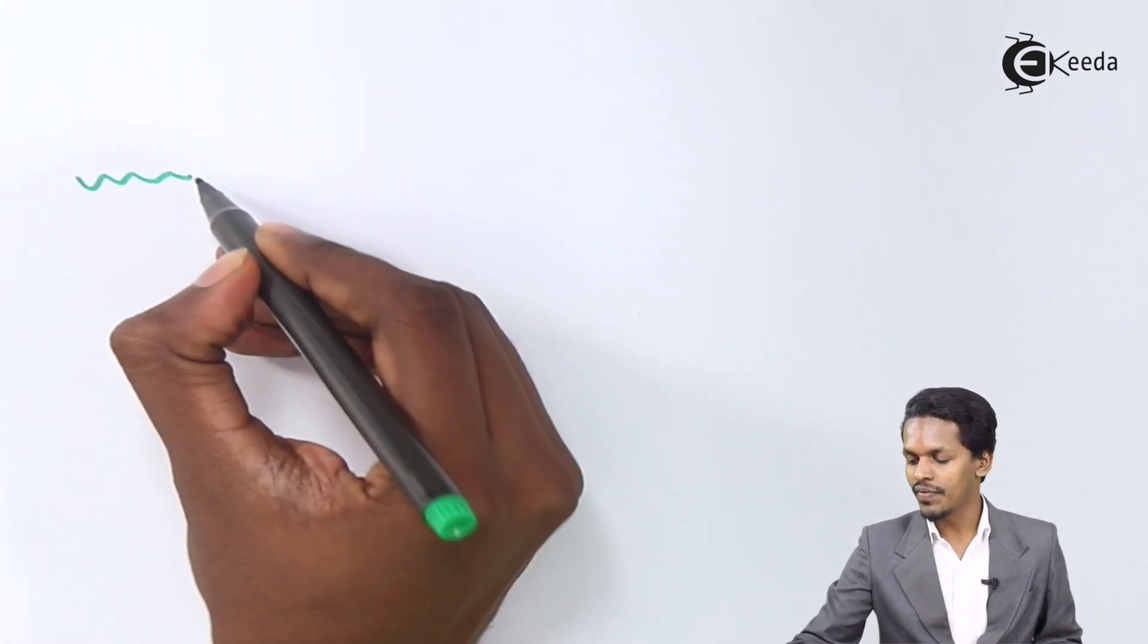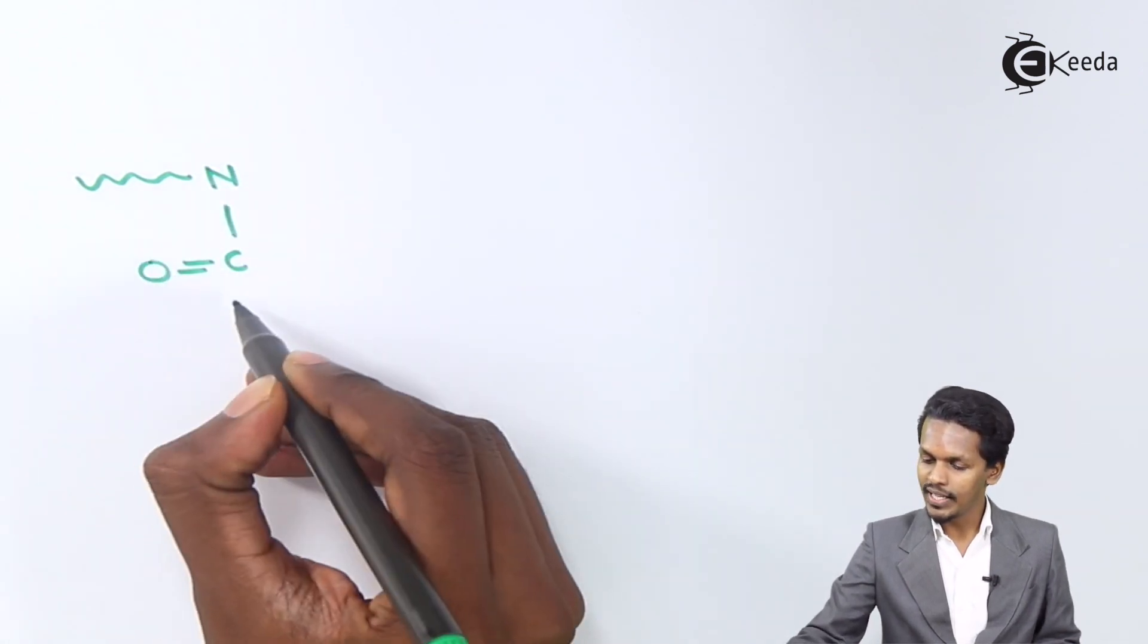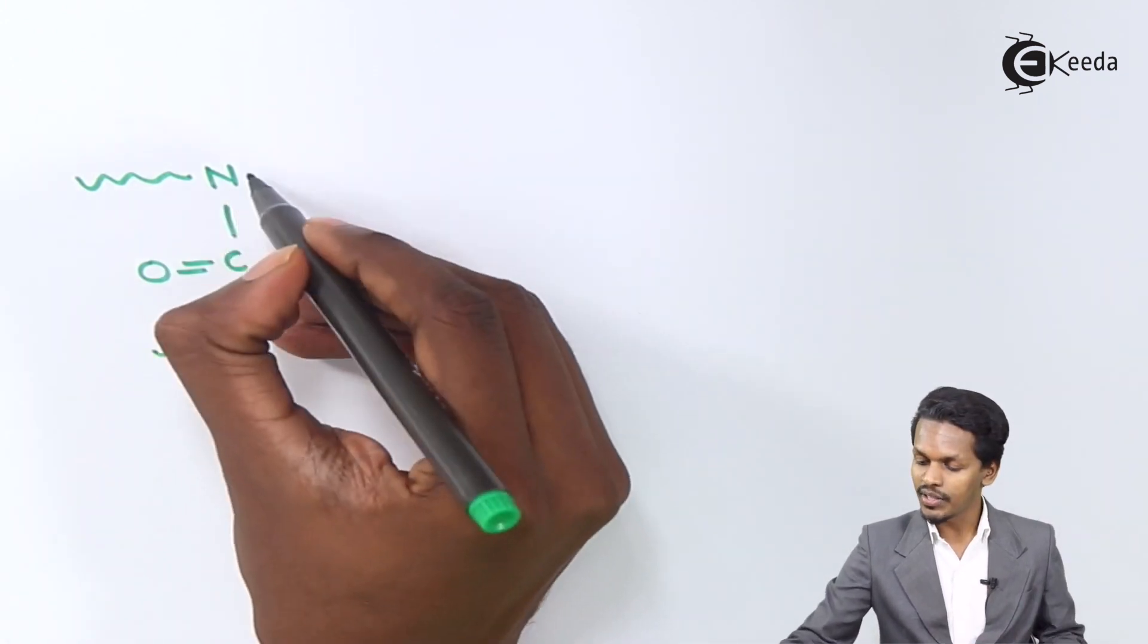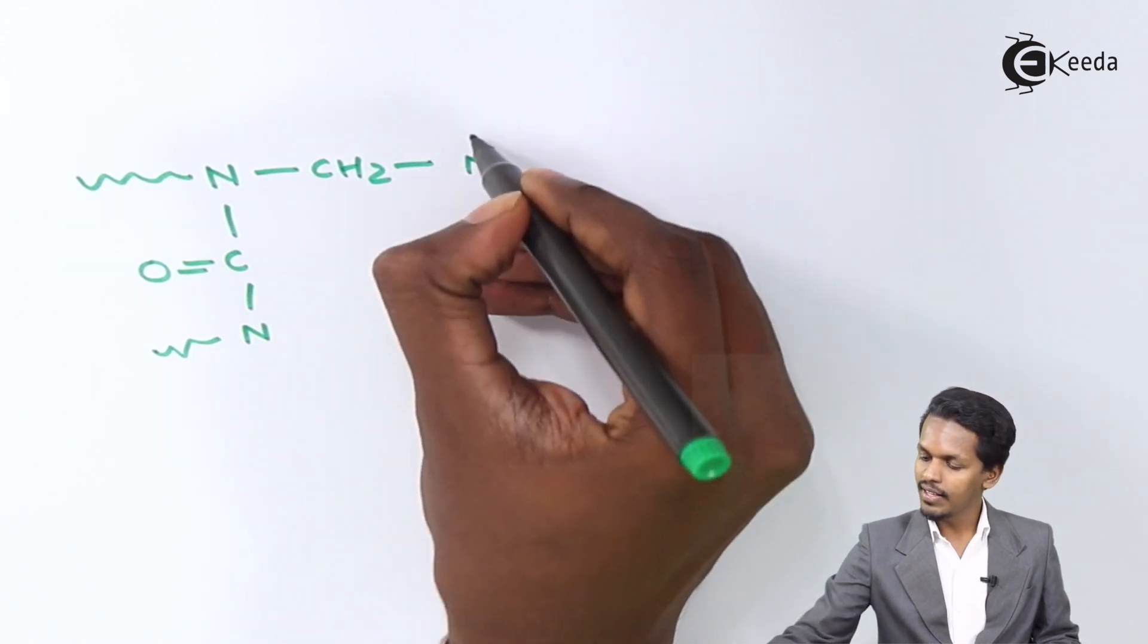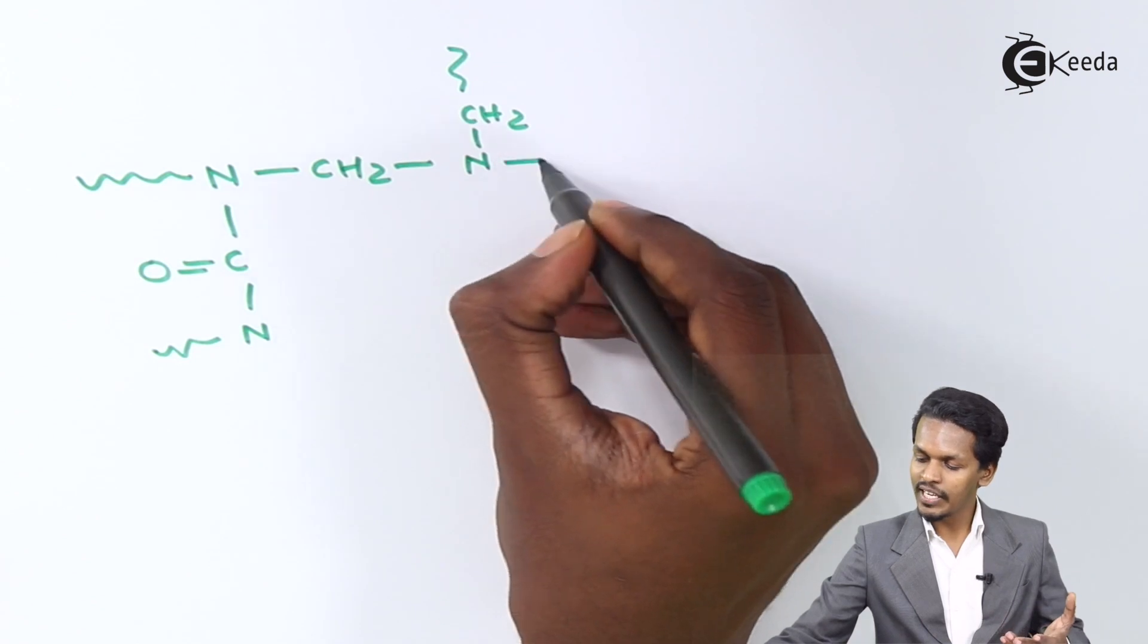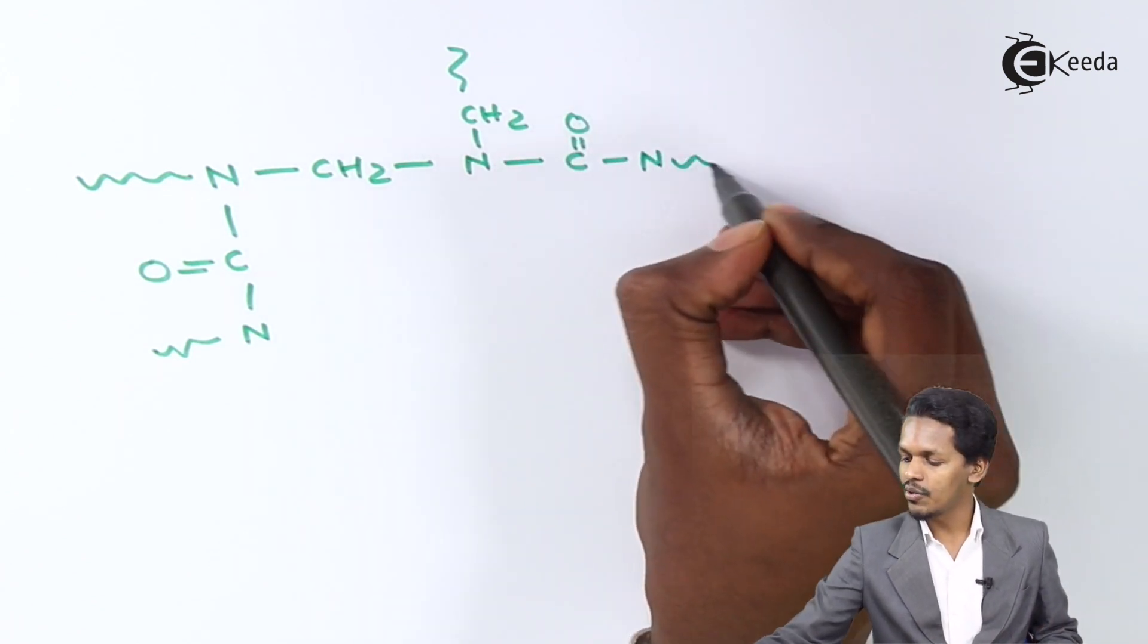The product that we could get is nothing but it will have a structure of N. This one will be C double bond O. Here also there will be N. This one will be a repetitive unit, and the product that we could get is CH2. It would be N. Here also it will be CH2. And this part will be attached with C double bond O. This is N, that is nitrogen.